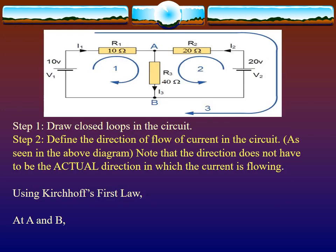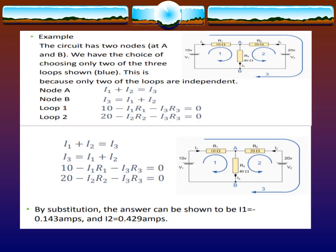Step 1: Draw closed loops in the circuit. Step 2: Define the direction of flow of current in the circuit, as seen in the diagram. Note that the direction does not have to be the actual direction in which the current is flowing. Using Kirchhoff's first law at A and B.